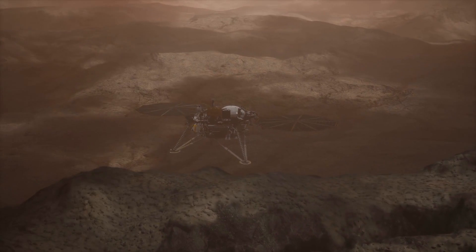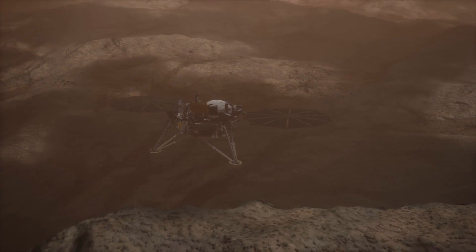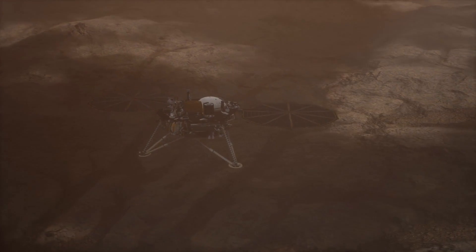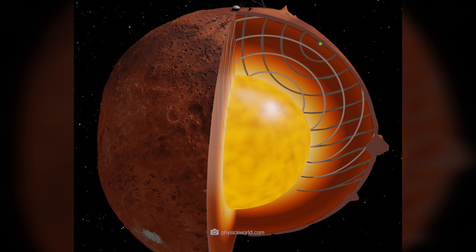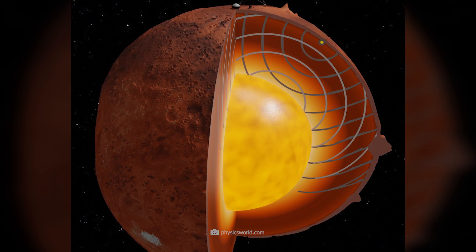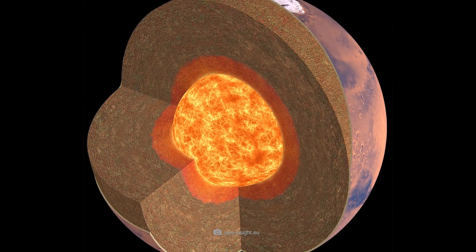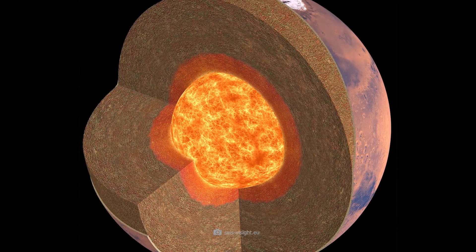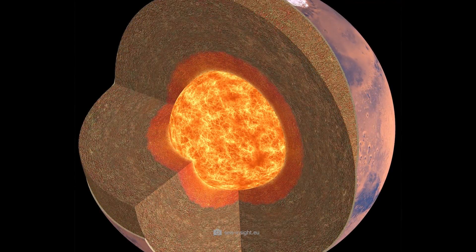The lander was now able to analyze waves that not only traveled around Mars, but also passed through it, once again providing researchers with new data and details about the structure of the core. Exactly this data completed the picture in a way that we now know Mars has a liquid core.